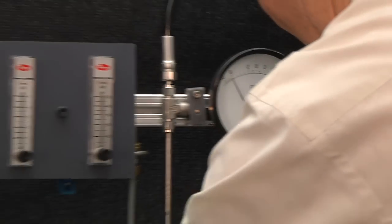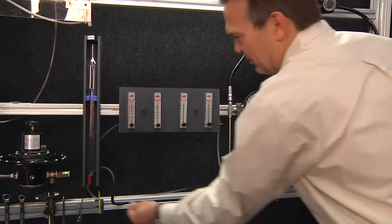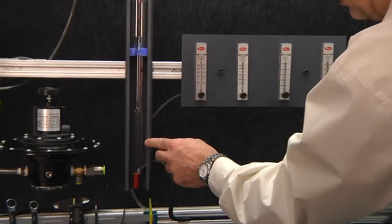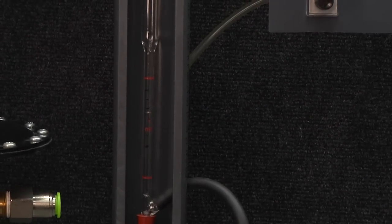As we switch over to the bubble meter, we're going to measure the flow. As you can see here there's a very slight movement in the bubble and I'm going to go ahead and shut the flow off completely.